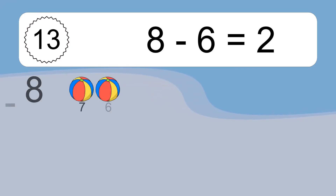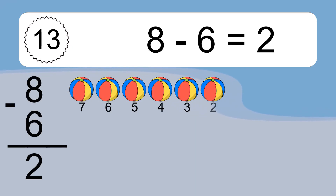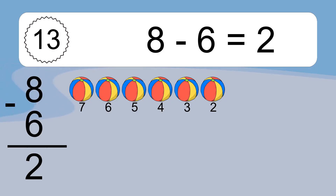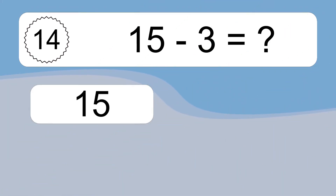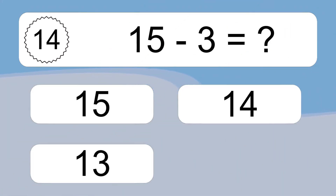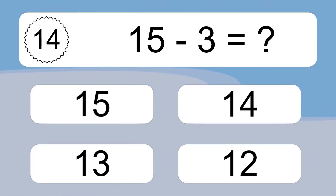8 minus 6 equals what? 8 minus 6 equals 2. Let's count it: 7, 6, 5, 4, 3, 2.